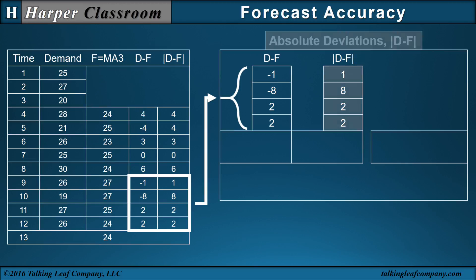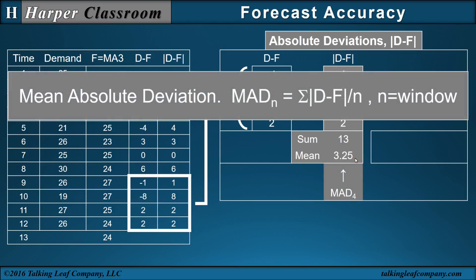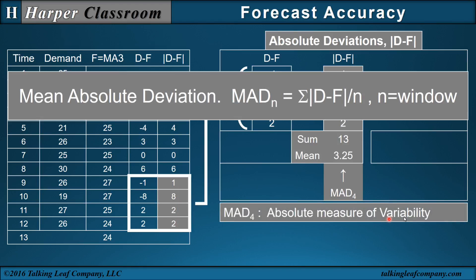Next, let's look at the absolute deviations. We want to sum the deviations and take the mean, and this mean will be the mean of the absolute deviations with a window of four, referred to as MAD. Here's our equation, where the sum of the absolute deviations is 13, n is four, so the mean absolute deviation is 3.25. The absolute values simply indicate the magnitude of the difference between our demand data and our forecast, indicating the variability of our forecasts around our demand. So the MAD is the absolute measure of the variability of our forecasts.